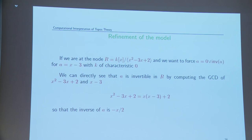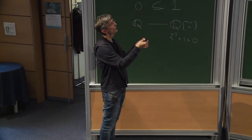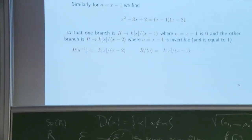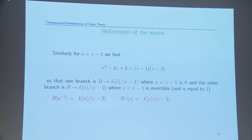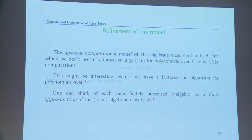Another example: you take x - 1 and ask for its inverse, or decide if it is 0. You compute the GCD, and by doing this computation you discover that the polynomial was not irreducible — you didn't know it before. You get information by doing computations in this way. By asking these questions, you discover a splitting of the algebra. This gives a computational model of the algebraic closure of a field using only GCD computations, not factorization algorithms. This approach may be more efficient than using a factorization algorithm. Note that this universal algebraic closure does not have automorphisms, so there is no canonical Galois group.